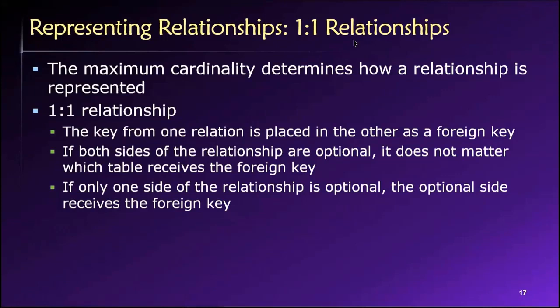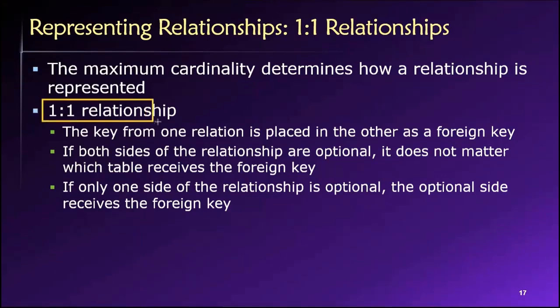We're going to begin by considering a simple one-to-one relationship. The idea is that each row in one table can be related to a maximum of one row in some other table. Examples include an employee and a parking space, or an employee and an office — that's a one-to-one relationship in most businesses, where each employee has just one parking space or one office.